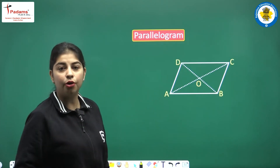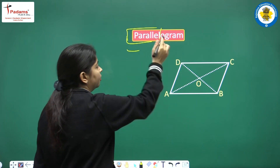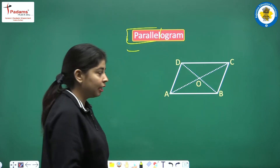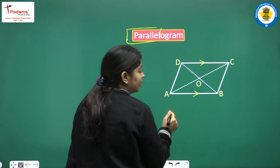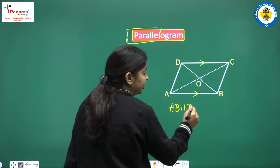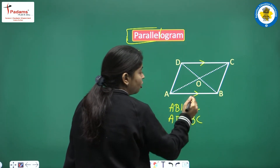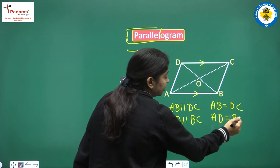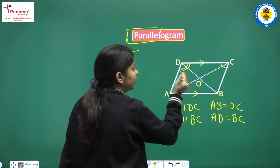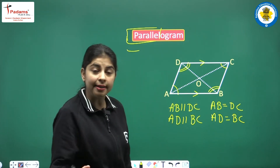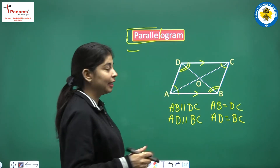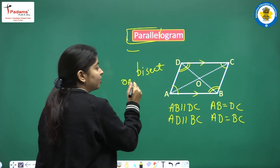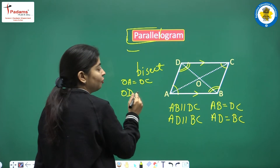Next, parallelogram. In a parallelogram, opposite sides are parallel and equal to each other: AB is parallel to DC, and AD is parallel to BC. Also, AD is equal to BC. Opposite angles are also equal. The diagonals bisect each other — meaning OA equals OC, and OD equals OB.